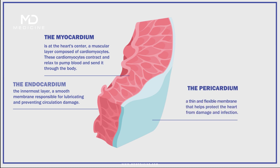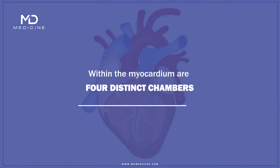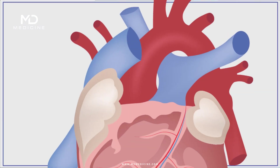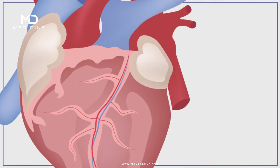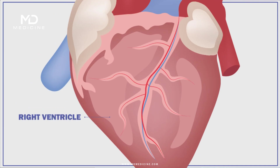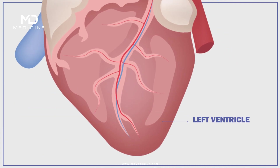Within the myocardium are four distinct chambers: the right atrium, the left atrium, the right ventricle, and the left ventricle.